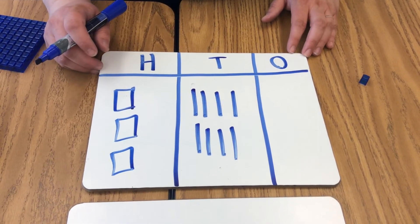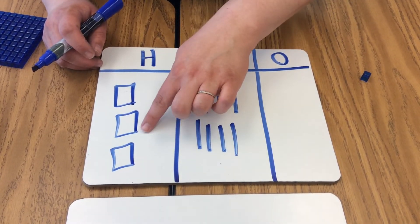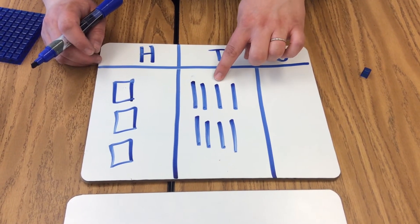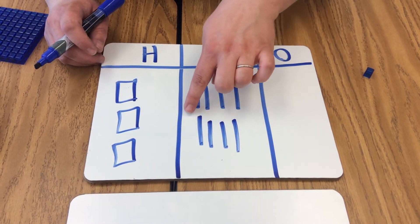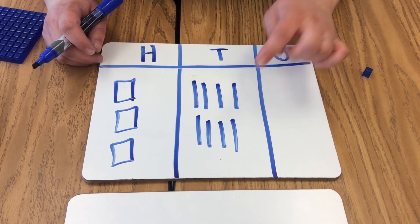Now it's important to count our number to make sure that our model matches our number. 100, 200, 300, 310, 320, 330, 340, 350, 360, 370, 380.